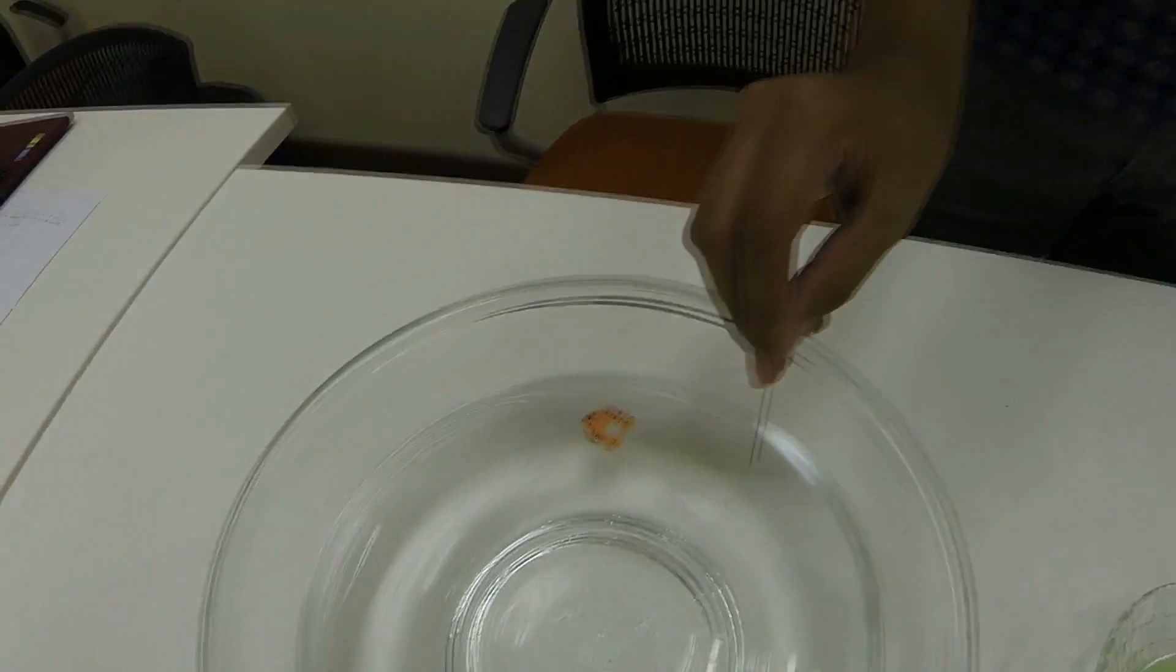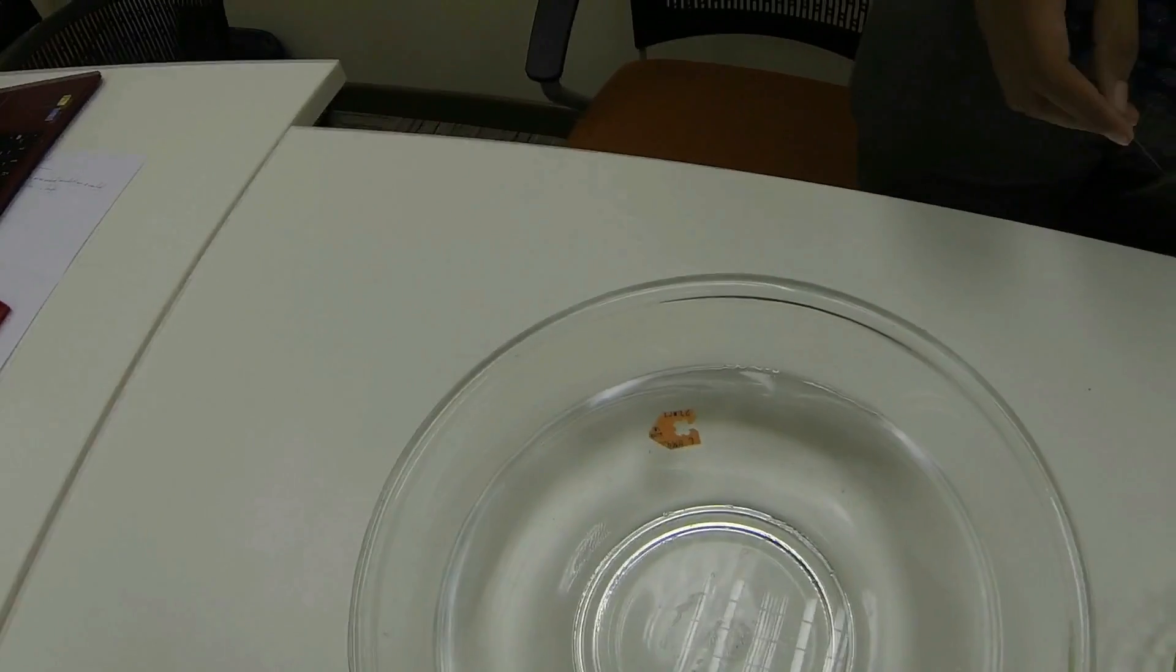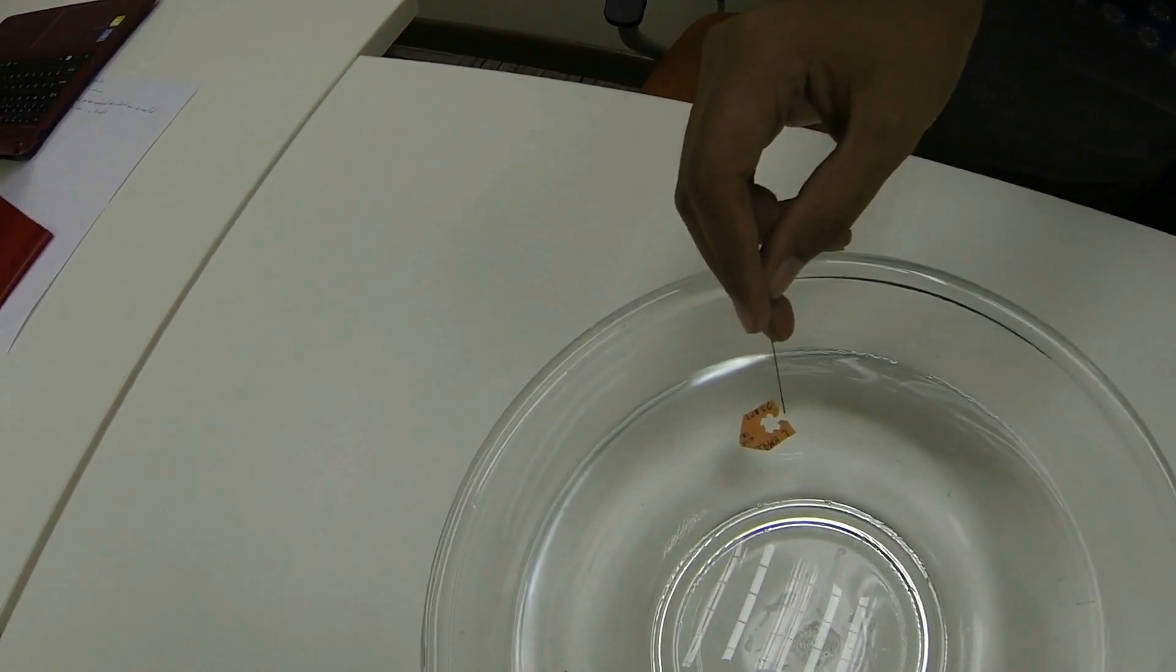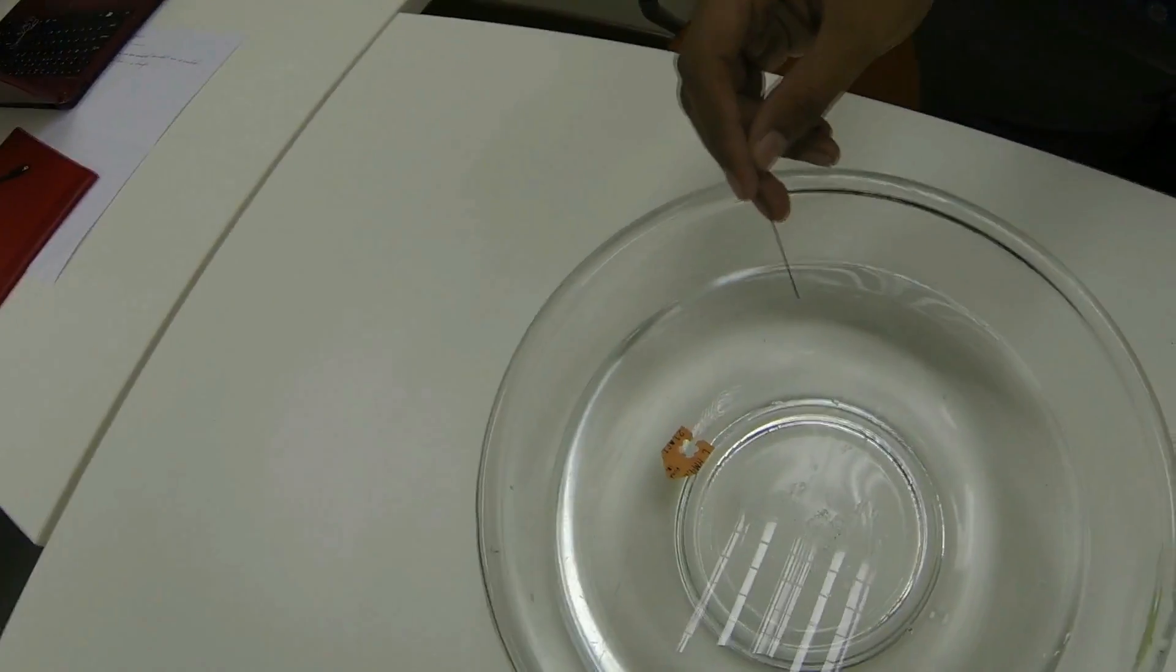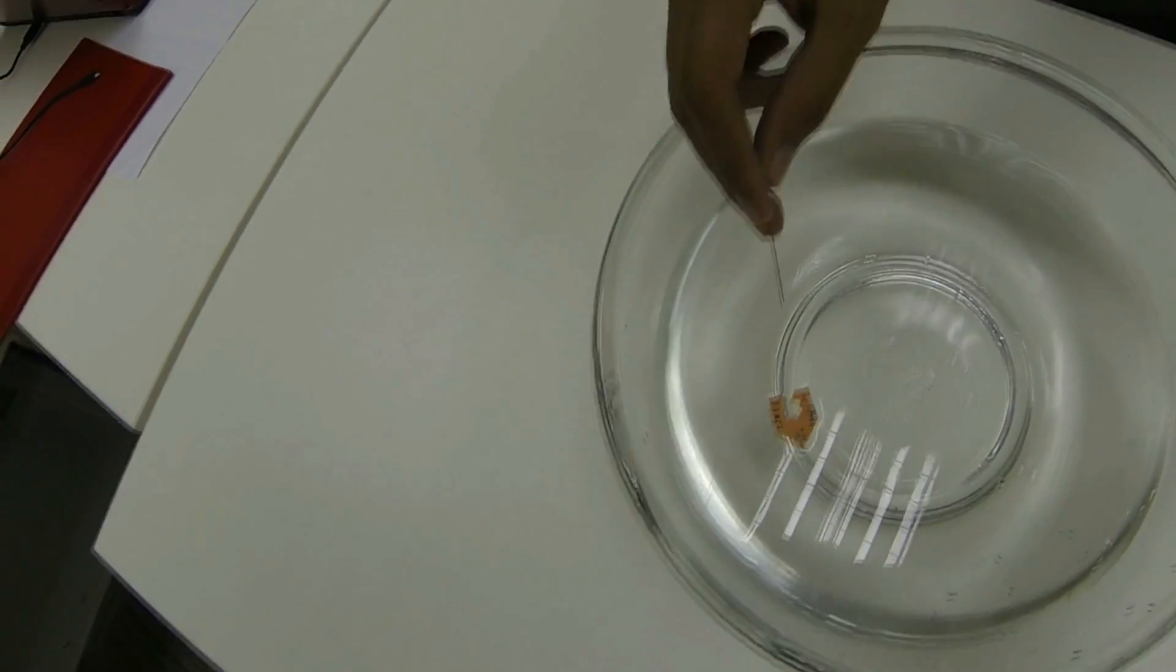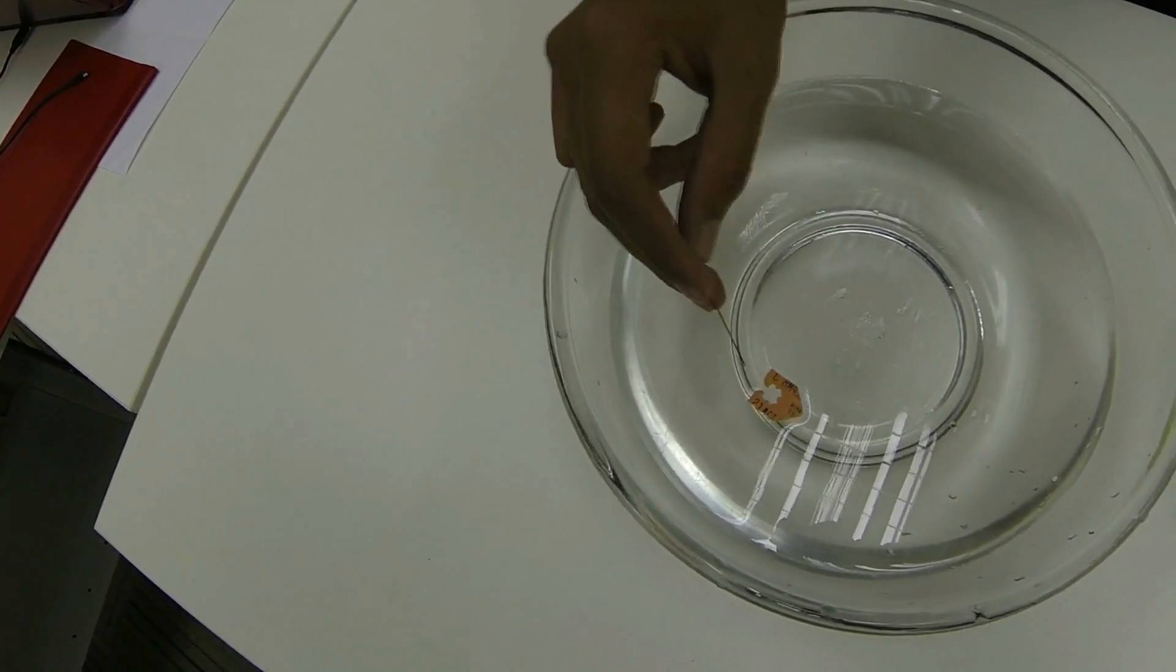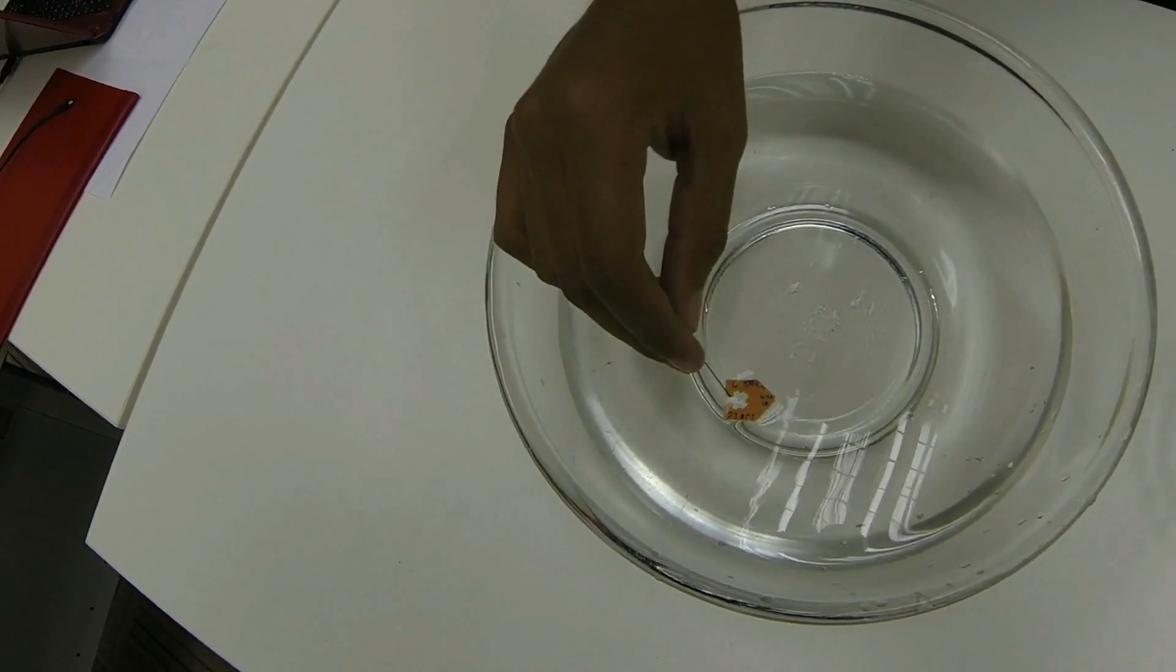However, the boat stops when the dissolving soap has reached the same concentration all over the water surface. This is because the intermolecular force between the water molecules is broken. Once the force is broken, it will not be formed spontaneously, so the boat does not propel anymore.